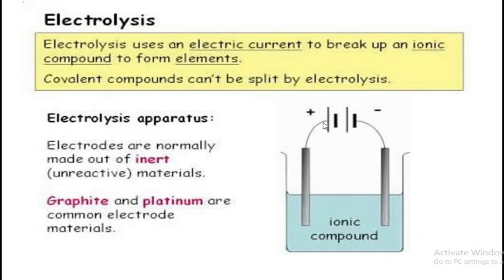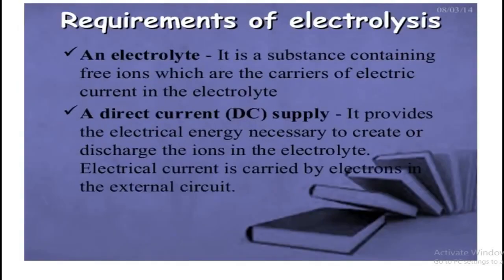Negative ions arriving at the anode give away their electrons. These electrons are drawn by the battery from the anode, pass through the battery, and arrive at the cathode. The cathode becomes rich in electrons. The positive ions — cations — from the electrolyte move to the cathode and gain electrons. This is how the electrolytic cell works.